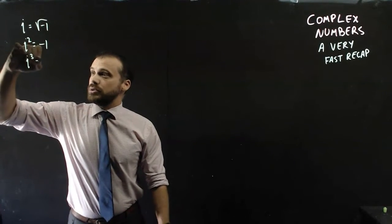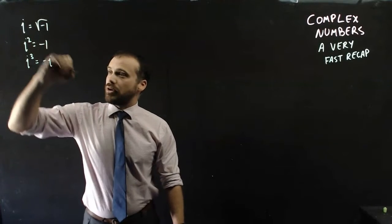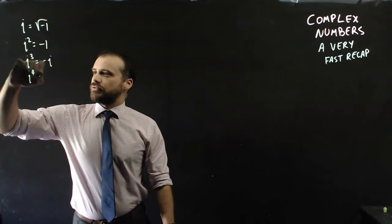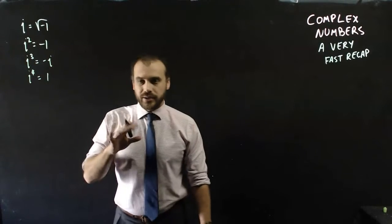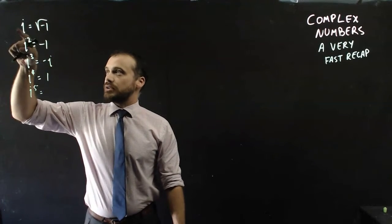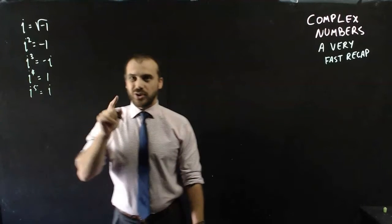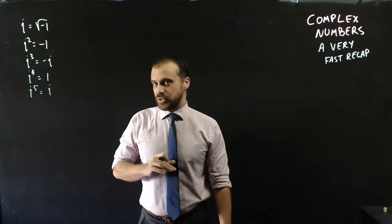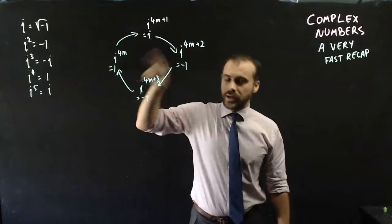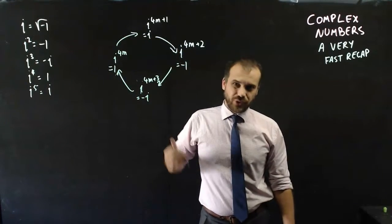If we were to make i cubed, we get negative i. Now, you've done this before, so I'm not going to explain why. i to the 4, and we get 1. Now, if we do i to the 5, we go back to where we started from, and that's equal to i. So what you get is a nice little circle. So i, negative 1, negative i, and 1 back around again in lots of 4.